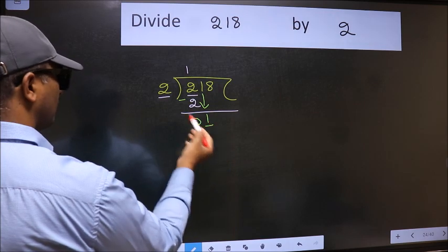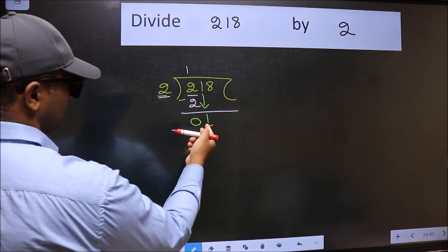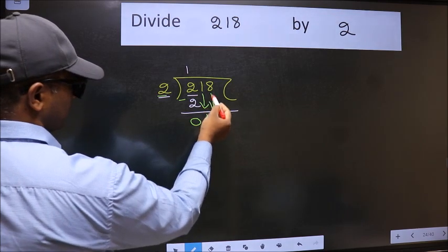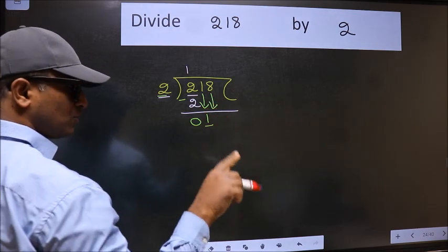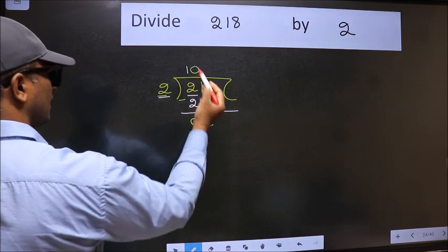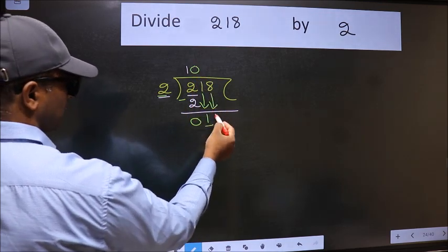Now here we have 1 and here 2. 1 is smaller than 2. So we should bring down the second number. And the rule to bring down second number is we should put 0 here. Then only we can bring this number down.